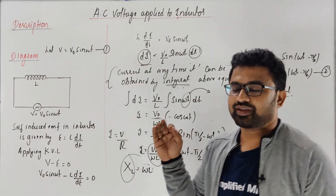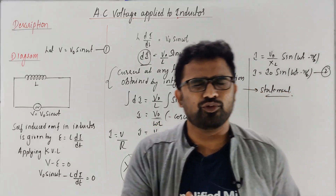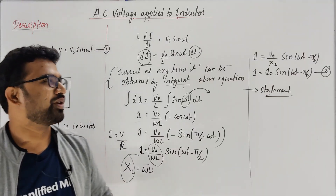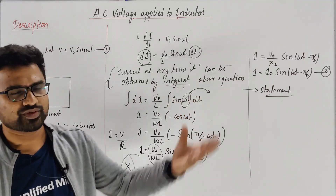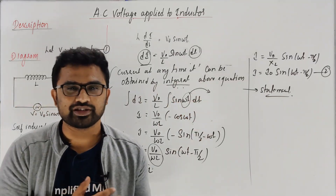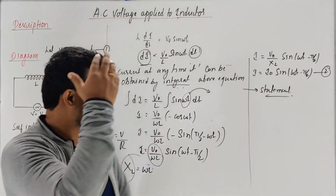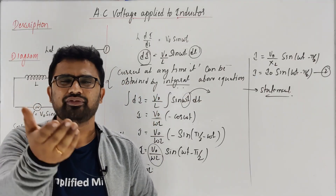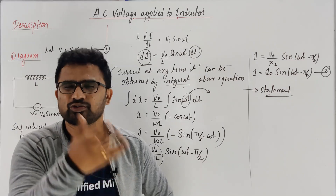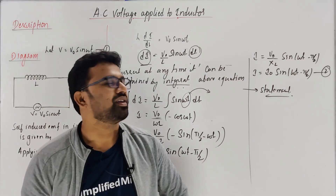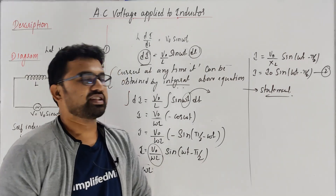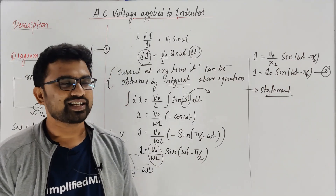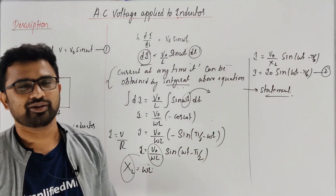My students, please write the statement: from comparing equations one and two, we can say that voltage leads current by π/2. That's it — description, diagram, and the full derivation. X_L is inductive reactance — resistance offered by the inductor. We'll also discuss capacitive reactance and impedance when we take all three together. I hope you understood. If you liked the video, please like it. You can find courses on the Simplified Minds app and download PDFs and previous year question analysis. Thank you so much, have a nice day — see you in the next video, bye!